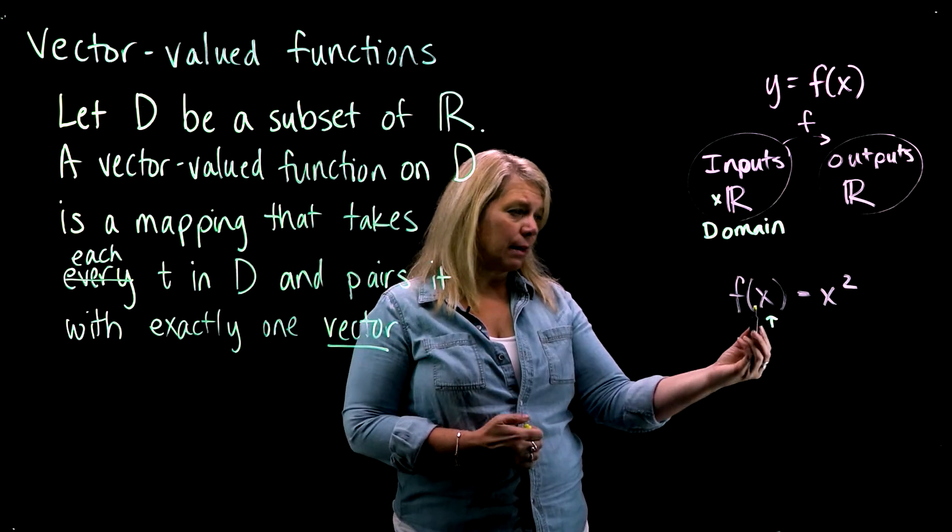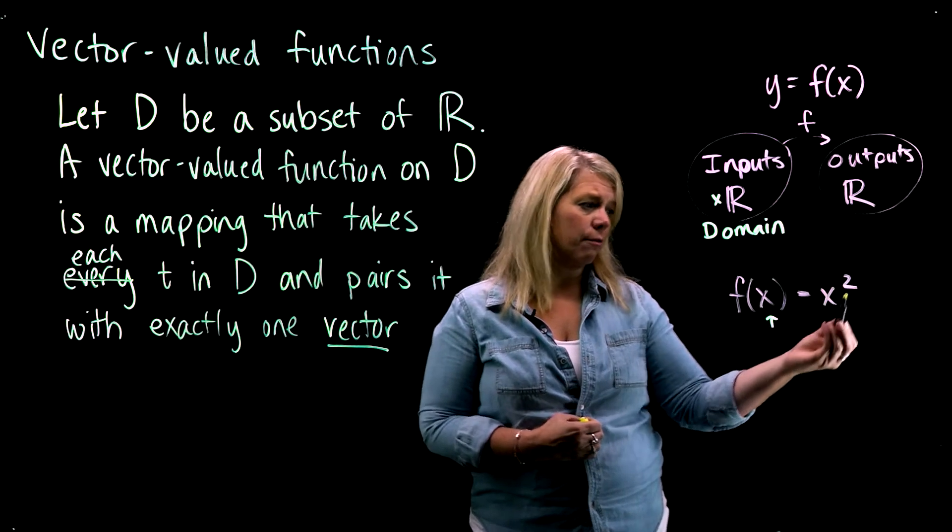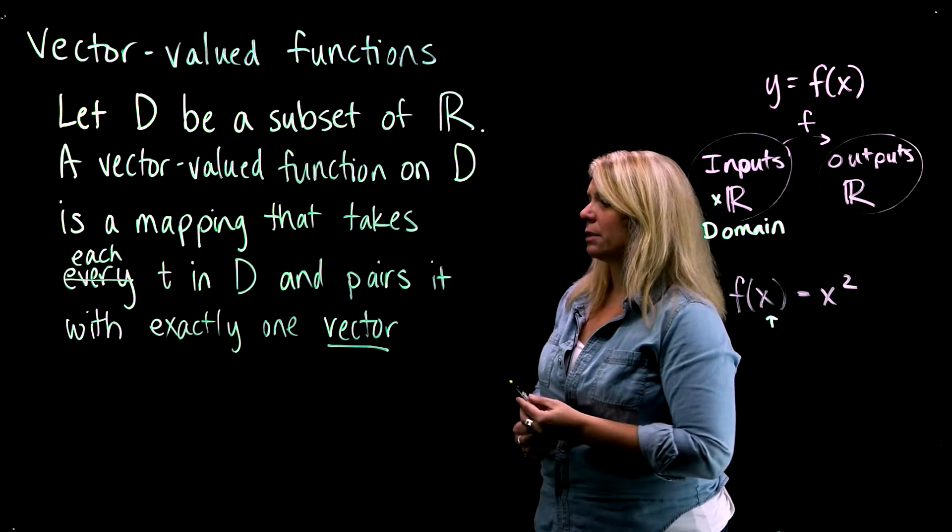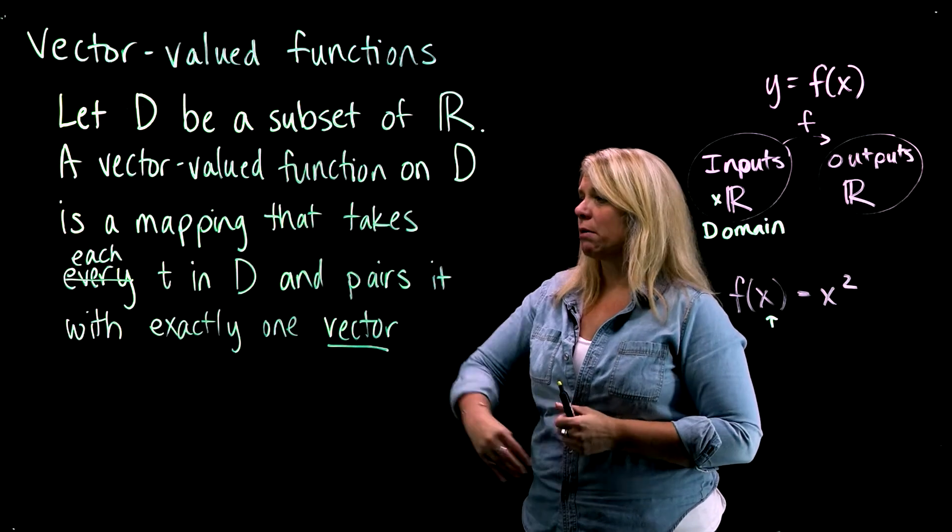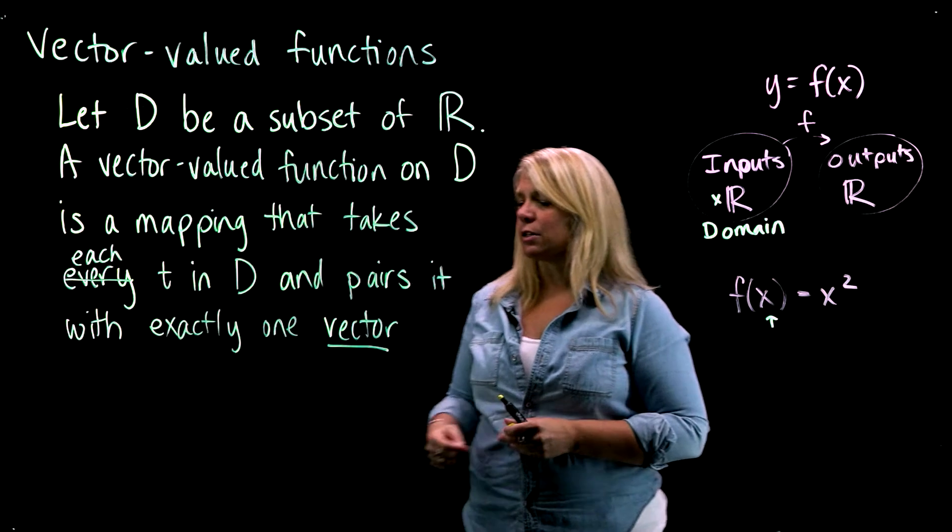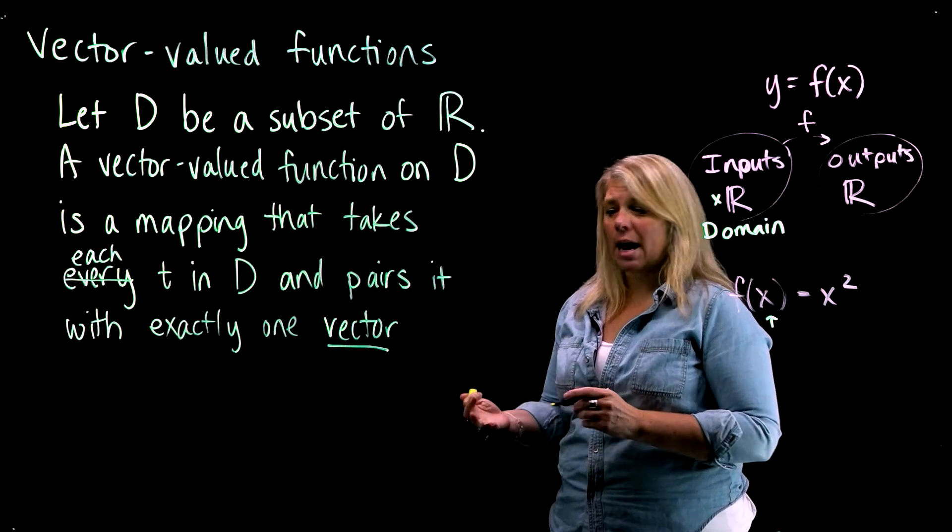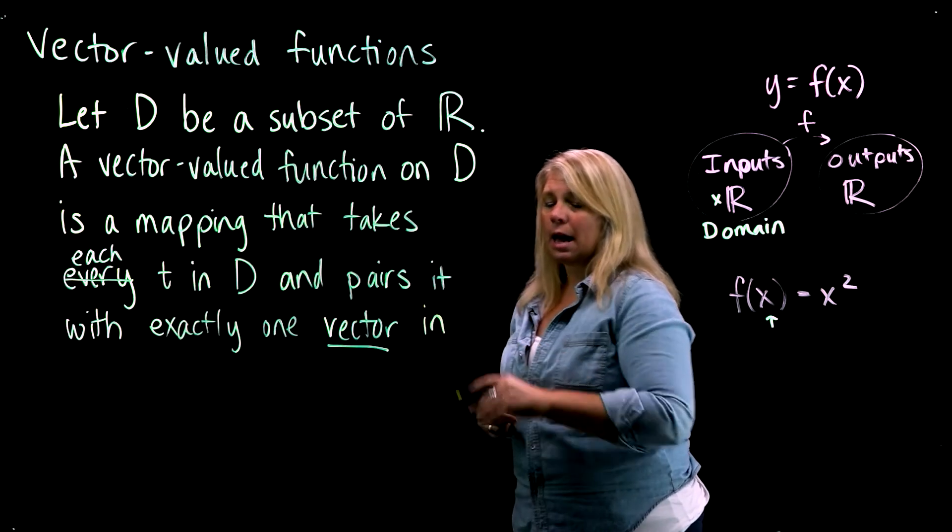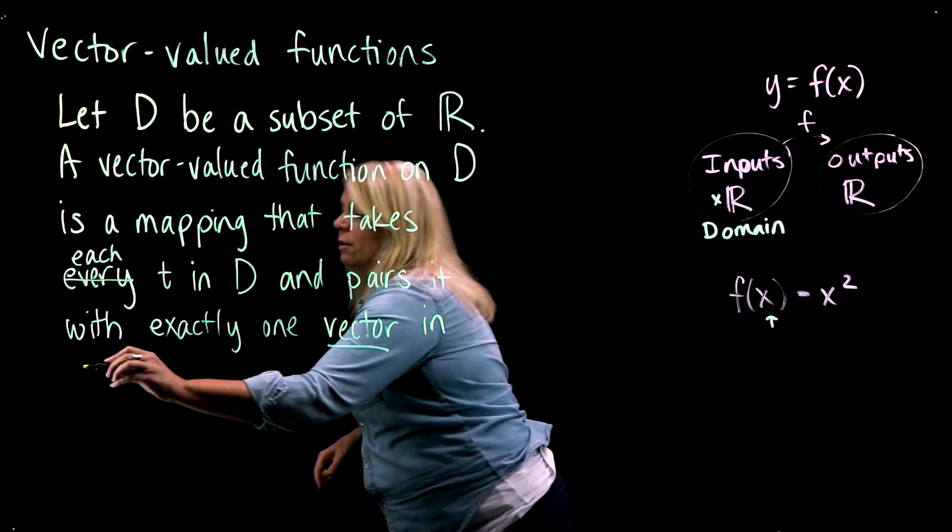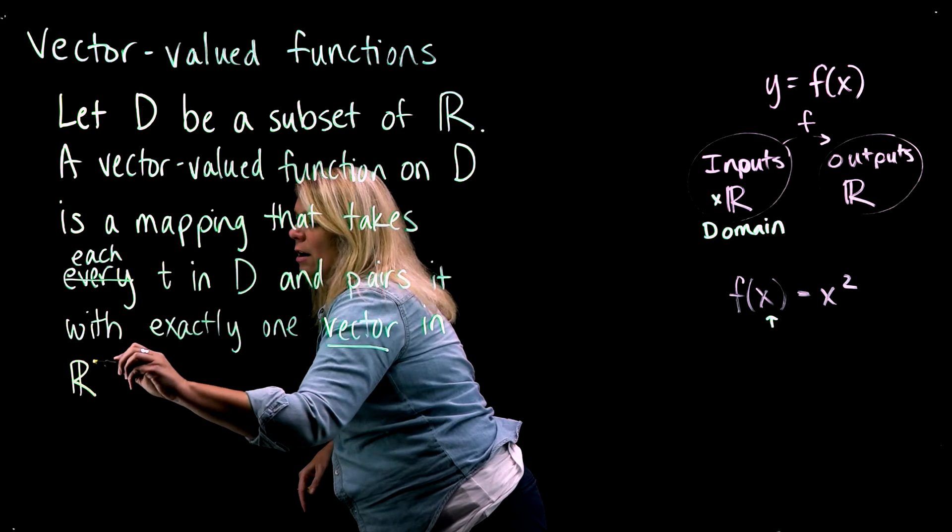The inputs, the real numbers, are paired to, for ordinary functions, real numbers. Input a real number, you get an output that's a real number. But here, what we're describing is that we've got real numbers, which we use t to describe, but those are paired to vectors. We might have those vectors in R2, R3, wherever, so we'll just say in ℝⁿ.